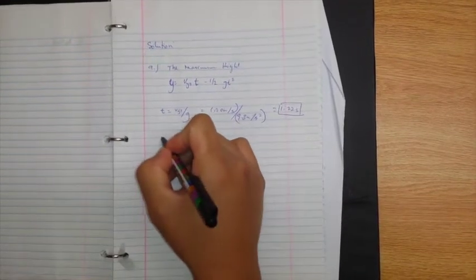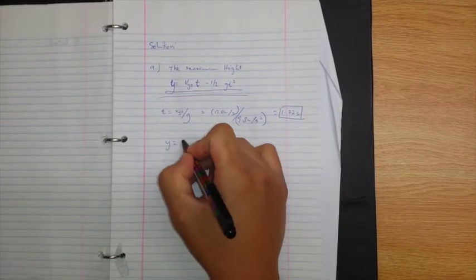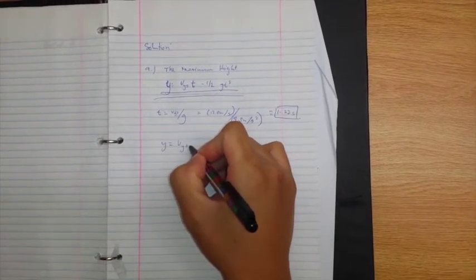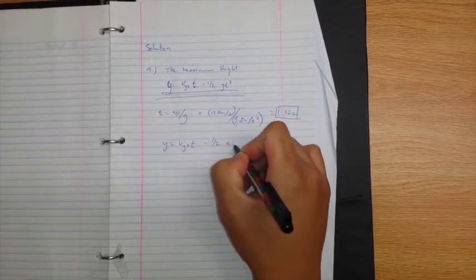Now we're going to solve for the height by using this formula. Y is equal to v_y0 multiplied by time minus one half g t squared.